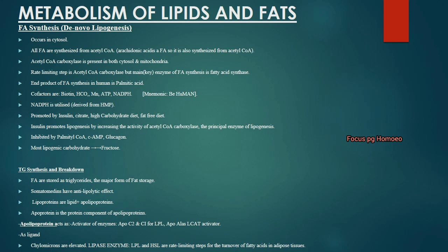The mnemonic continues: Mg for magnesium, Mn for manganese, A for ATP, and N for NADPH. These are the co-factors for fatty acid synthesis. NADPH is utilized in this process.